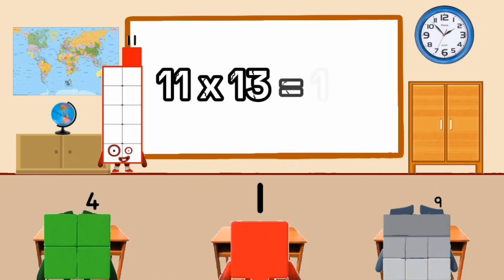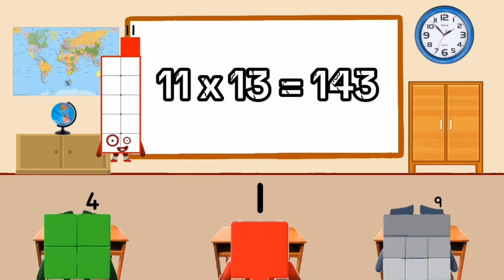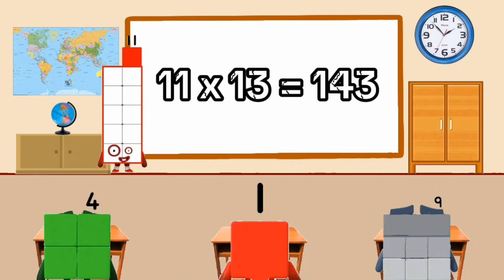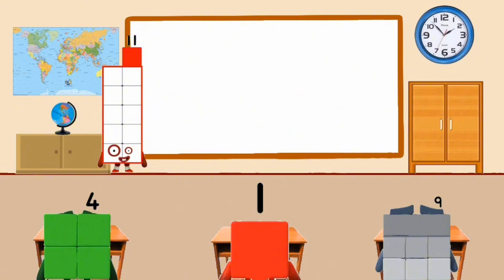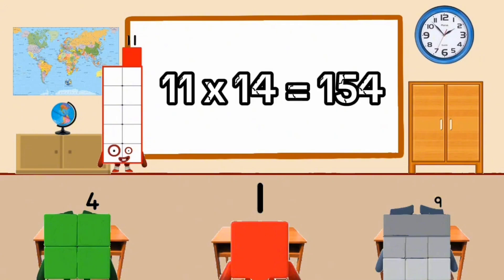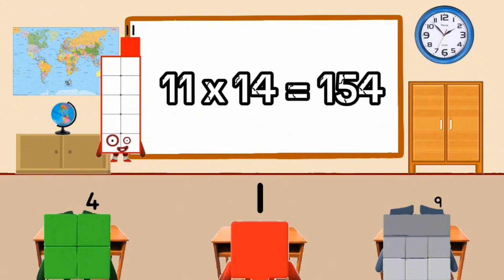11 times 13 equal 143. 11 times 14 equal 154.